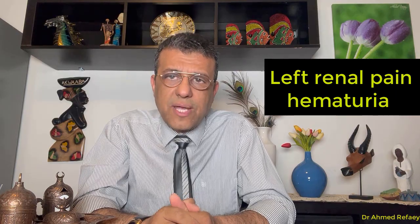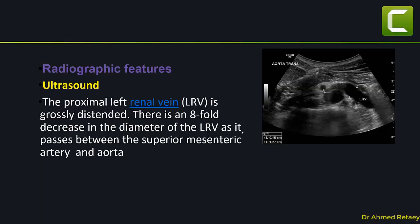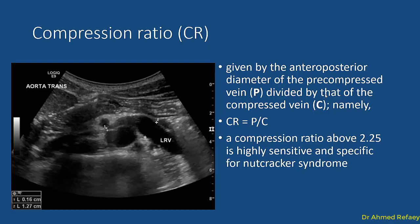Regarding the radiographic features of Nutcracker Syndrome, starting with ultrasound: the proximal left renal vein is grossly distended. As seen in this image, there is marked dilatation of the proximal left renal vein, with at least an eightfold decrease in the diameter of the left renal vein as it passes between the superior mesenteric artery and the aorta. Here we can measure what is known as the compression ratio.